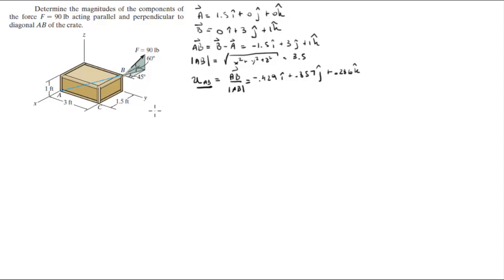So that's the first vector that we need, the unit vector AB. The second Cartesian vector form that we need is the Cartesian vector form of the force, which we know has a magnitude of 90 pounds.